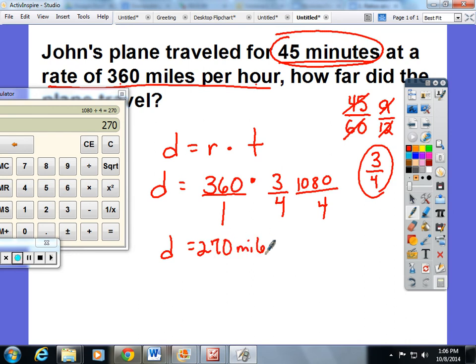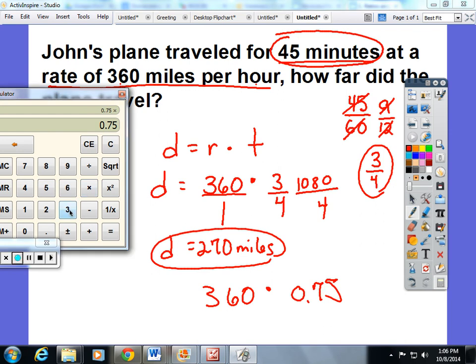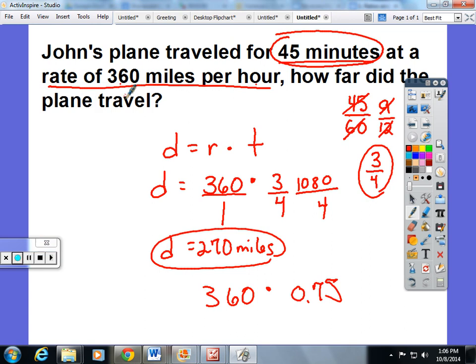I would also be okay with students turning 3 divided by 4 into a decimal and multiplying on their calculator 360 times 0.75. Because they are really going to get the same answer of 270 miles. I hope this helps you understand Lesson 22.